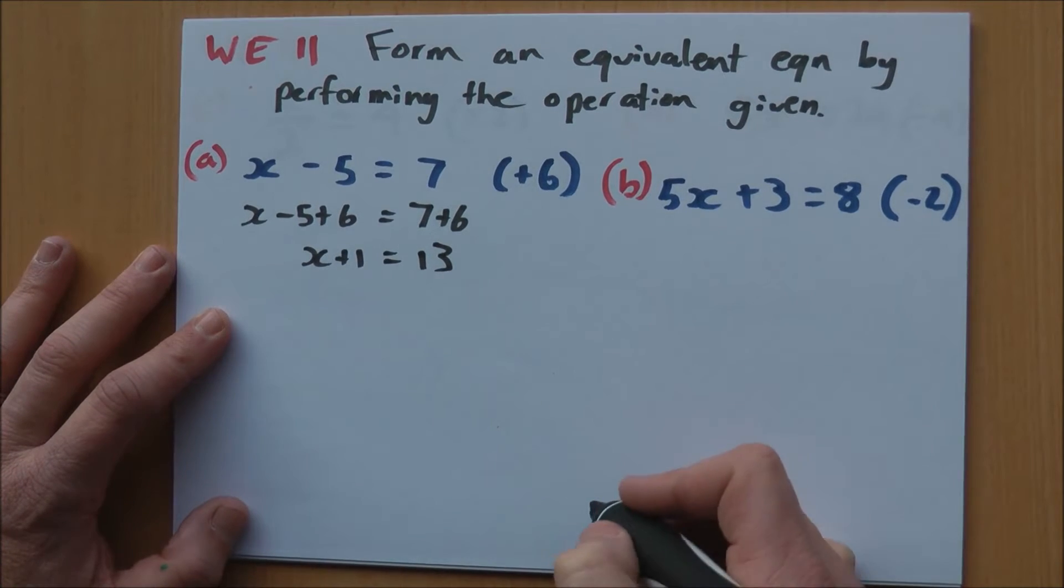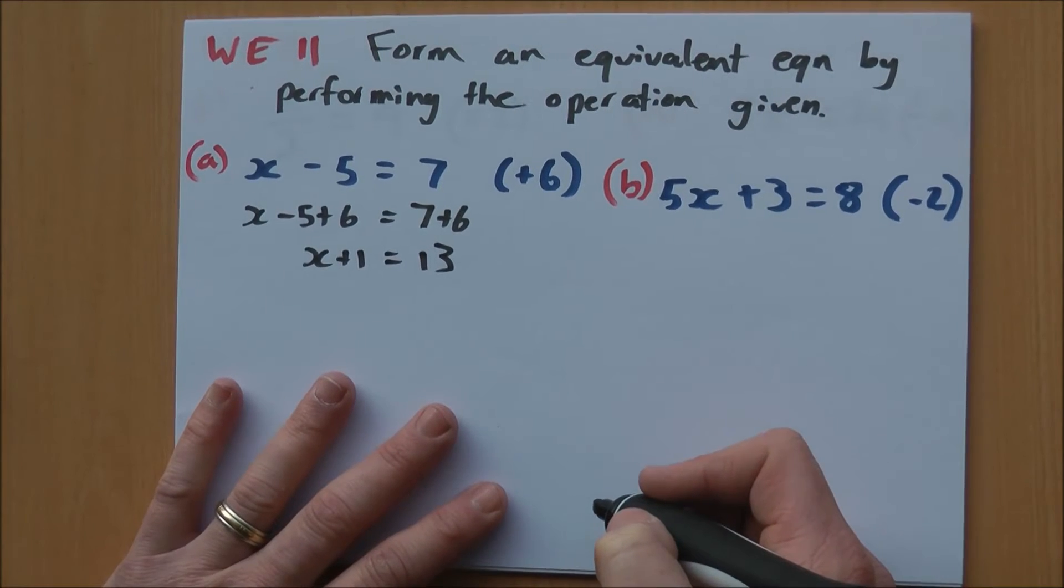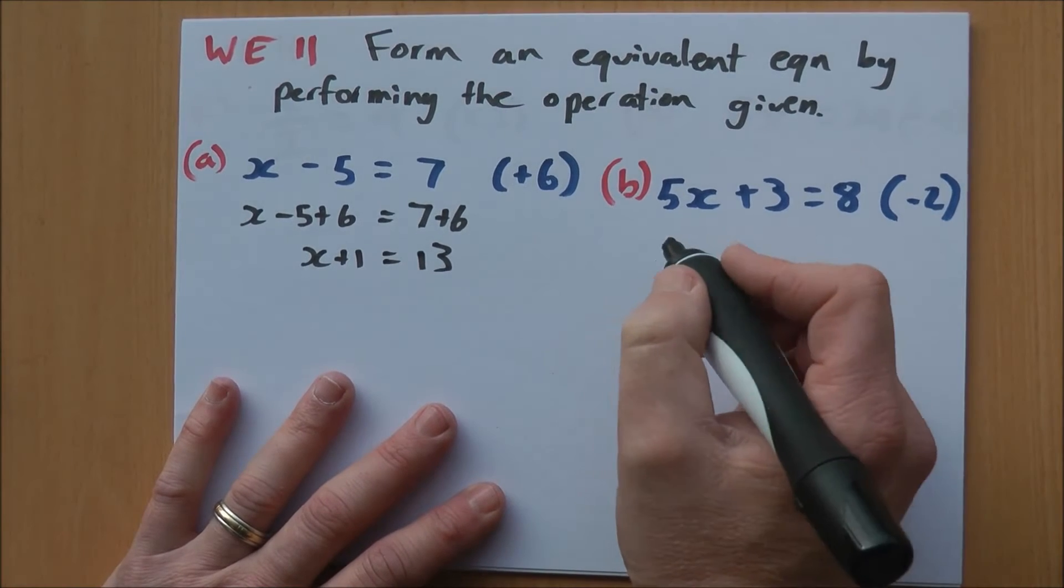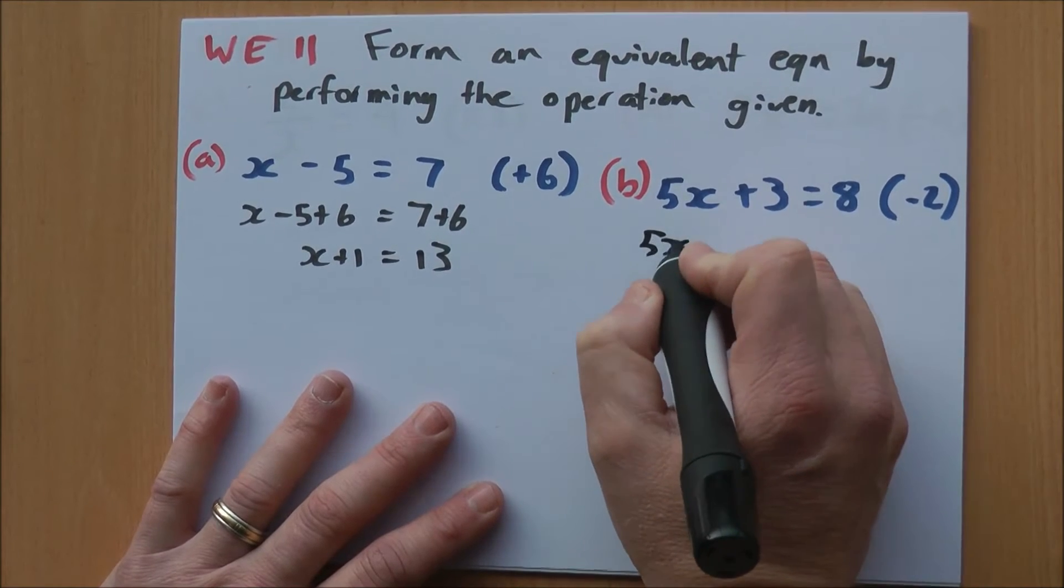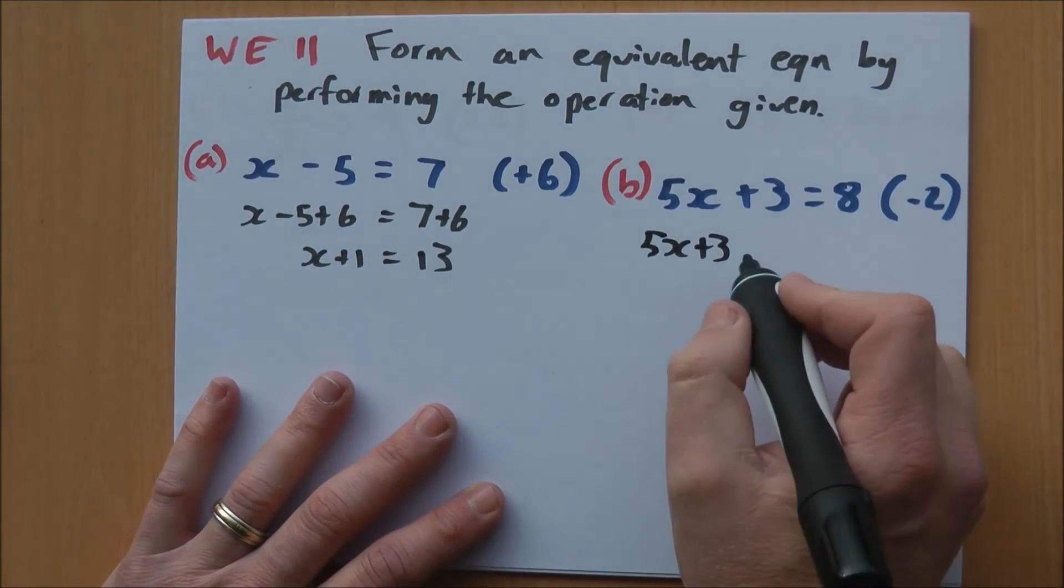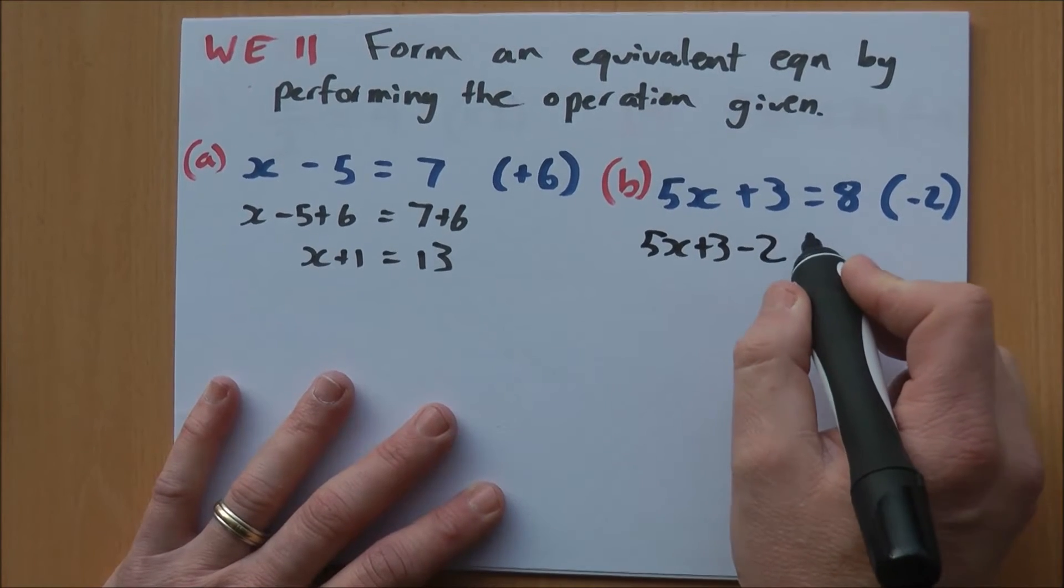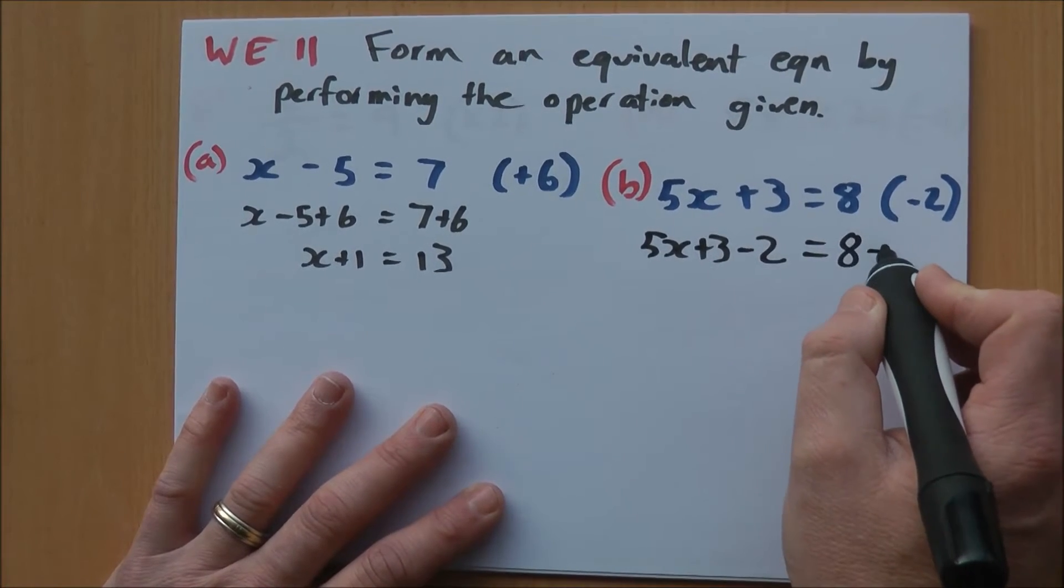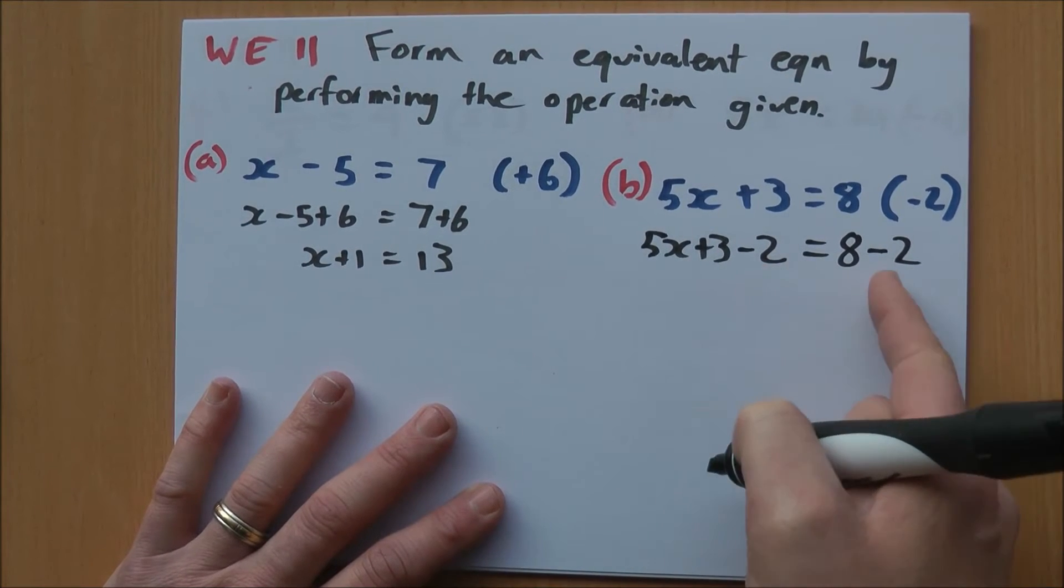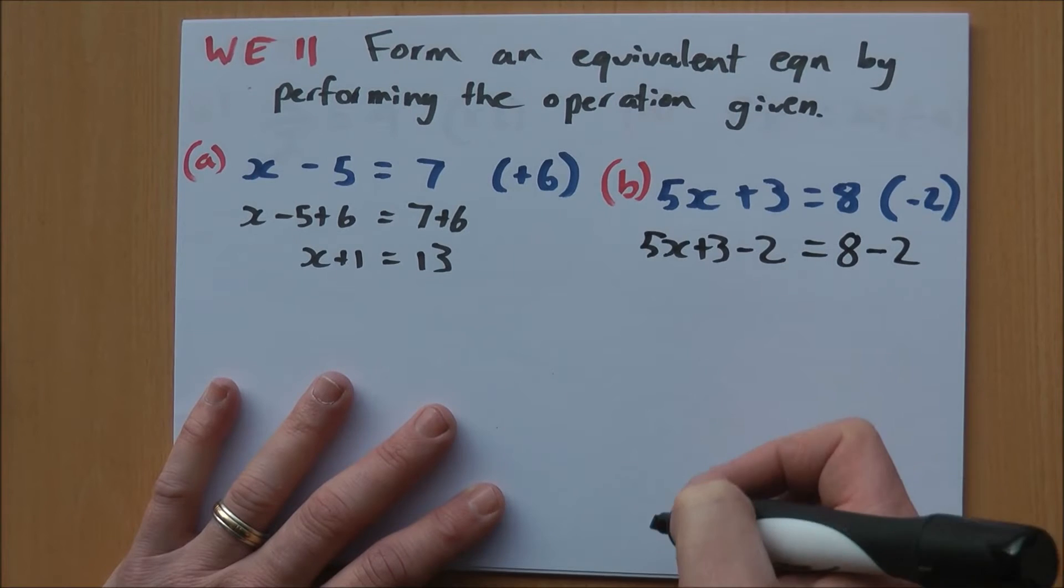Part B. 5x plus 3 equals 8, and I want to subtract 2 from both sides. So I do the same thing. 5x plus 3, I write all of that down again, and then I subtract 2. Write down my 8, subtract 2. And I've done it to both sides there. Let's see what we can work out.